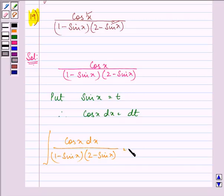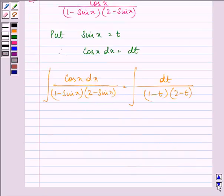On substituting the values, we will have dt upon 1 minus t into 2 minus t. The above fraction can be solved by using partial fraction method.